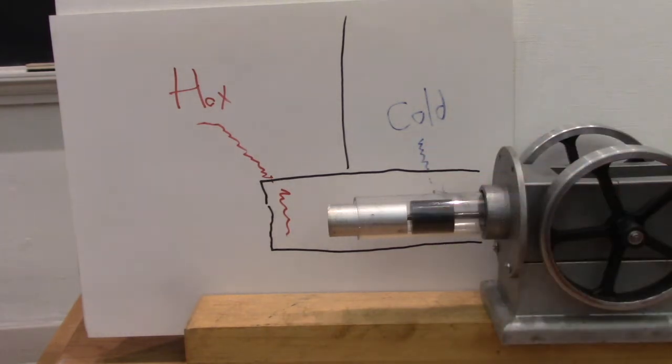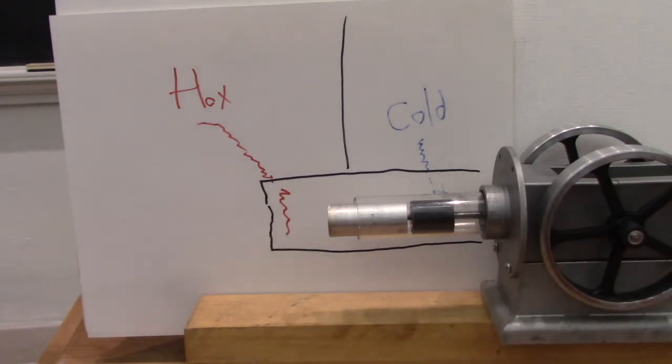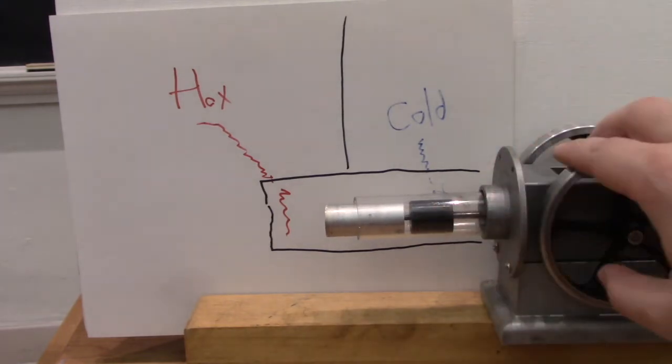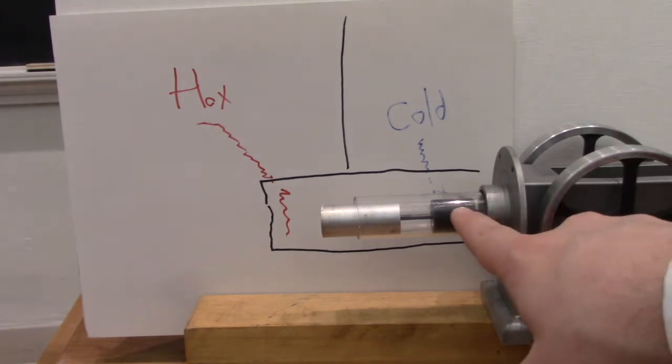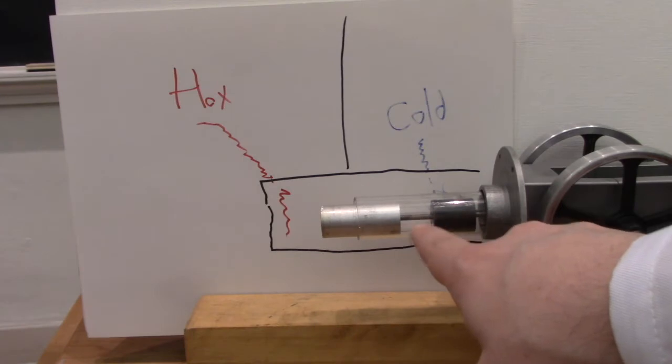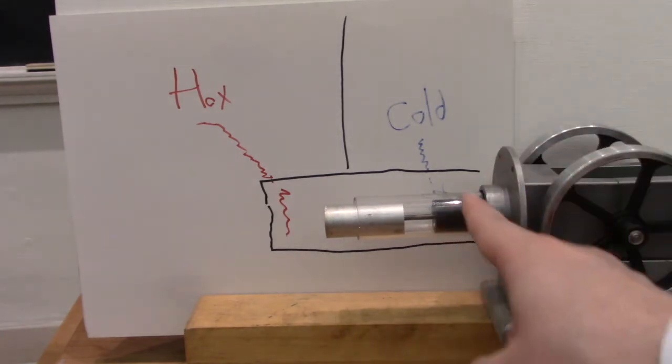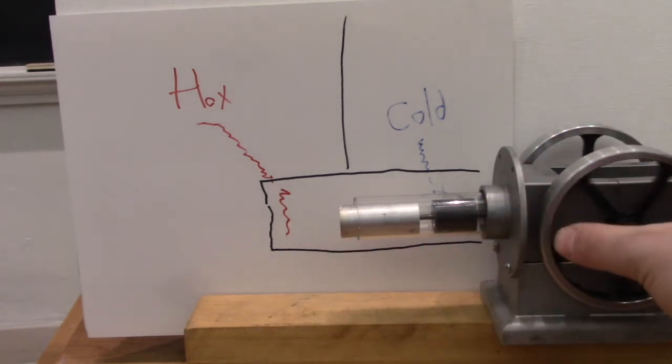We'll start our cycle here with a lot of hot air on this side of the cylinder. The hot air is going to want to expand and increase the overall size of the chamber. It's going to push the power piston out. But by pushing the power piston out it's also pushed some of the hot air over onto the cold side.